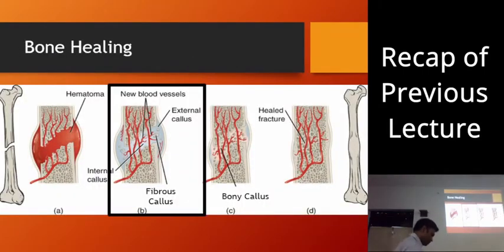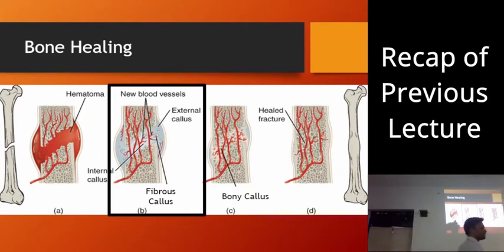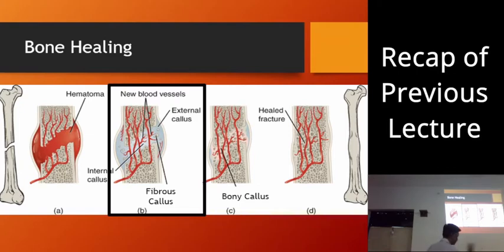Basically, distraction osteogenesis is that we pause the bone healing process at the fibrous callus formation stage. This fibrous callus is a little malleable — we can stretch it, but there is a limit. That limit is also given by Dr. Gabriel Ilizarov.